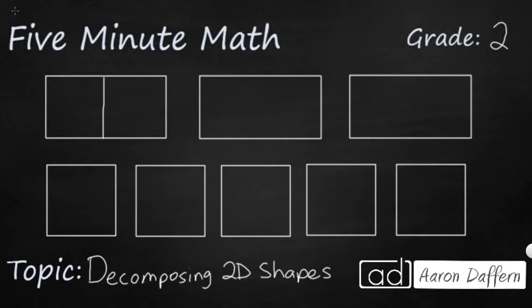So if I take this rectangle and cut it in half, I have two squares. I've decomposed or broken it down into two squares. You can always take two squares, stick them side by side, and you can always make a rectangle.